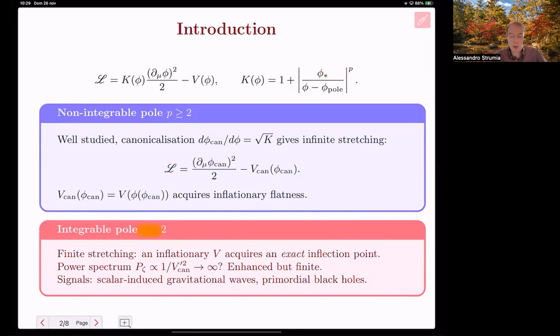We instead consider a pole with power below 2. This means that it's integrable and the potential only acquires a finite stretching, so the pole can be crossed during inflation, and at the pole the canonical potential acquires an exact inflection point where the first derivative vanishes. Naively, the power spectrum is infinite. A full computation gives something enhanced but finite with the consequent signals.